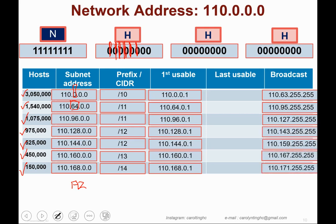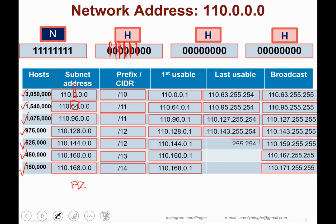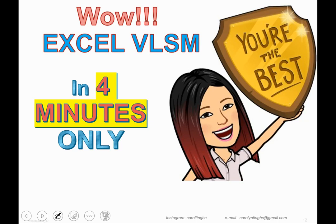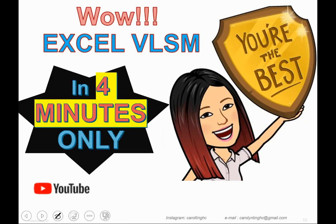The last usable address is the broadcast address minus one. So for the first subnet, 110.63.255.255 minus one gives 110.63.255.254. You apply the same logic to get all the subsequent last usable addresses. And that's how you complete the VLSM calculation — all done in just four minutes!